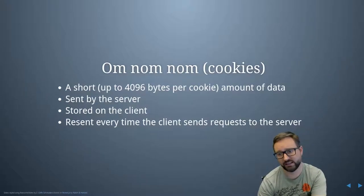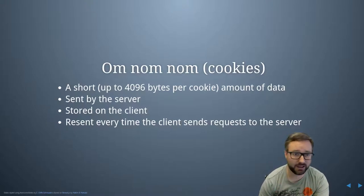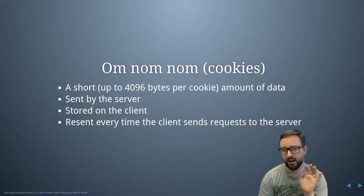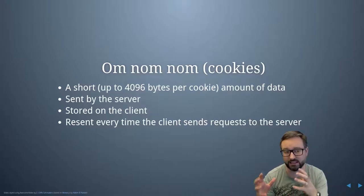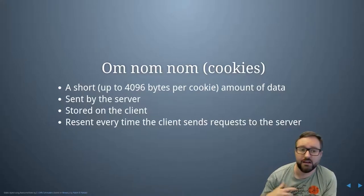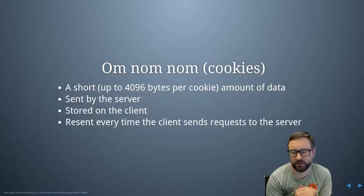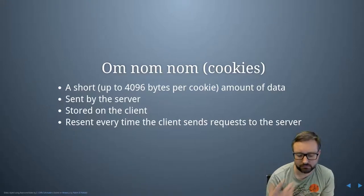A cookie is a short amount of data — up to 4,096 bytes, so around 4 kilobytes maximum. Typically, the server sends it to the client, it gets stored on the client, and every time that web browser revisits the same website, it resends all the cookies it has for that website. It is also possible for JavaScript to set cookies on the client side, but either way, each time you go back to the website, those cookies get sent along.